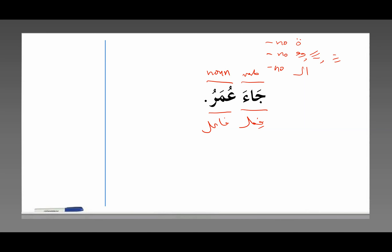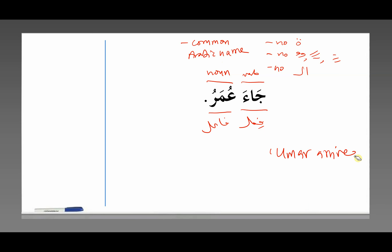How do we know that this is a noun? There's no ta marbuta, no tanween, no aleph lam. We just have to recognize that Umar is a very common Arabic name. We've seen this several times at this point. So what does this mean? Umar arrived — a very simple sentence.